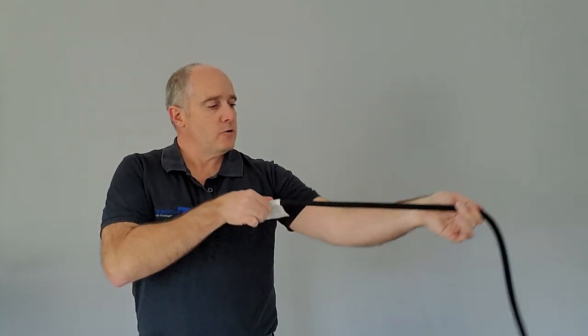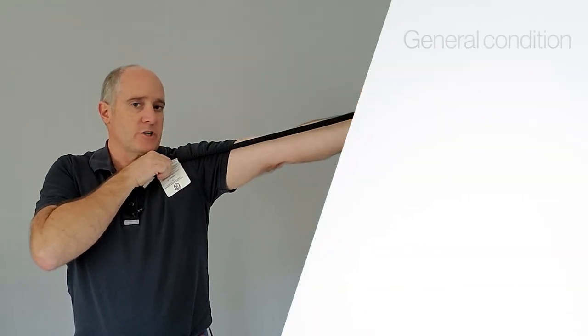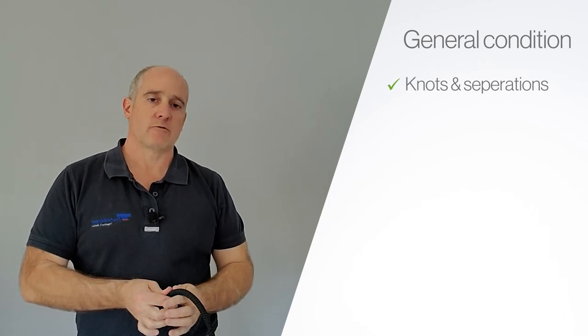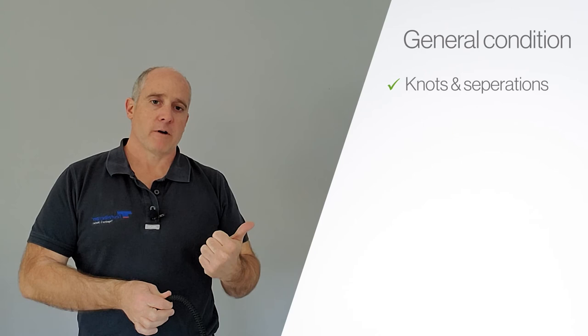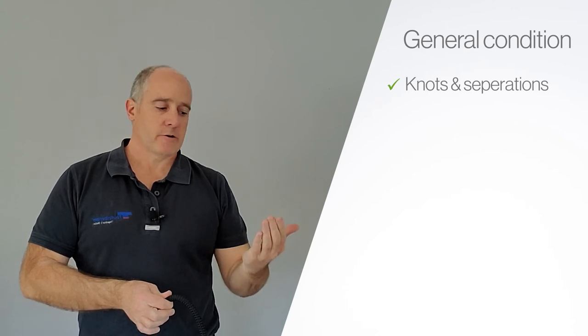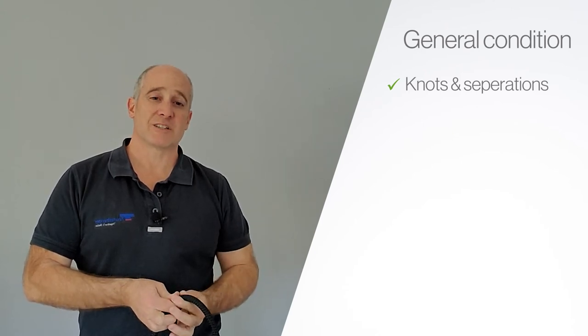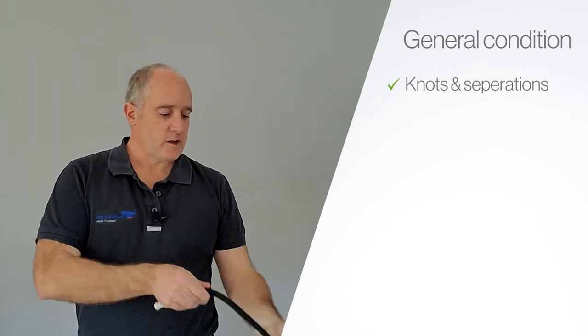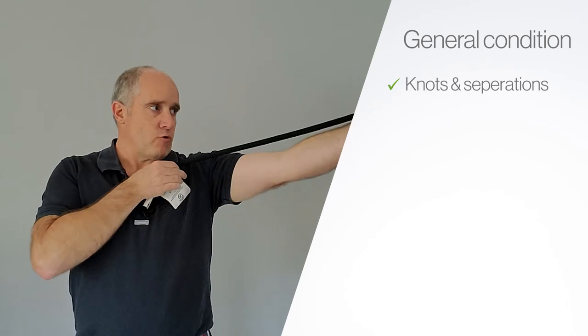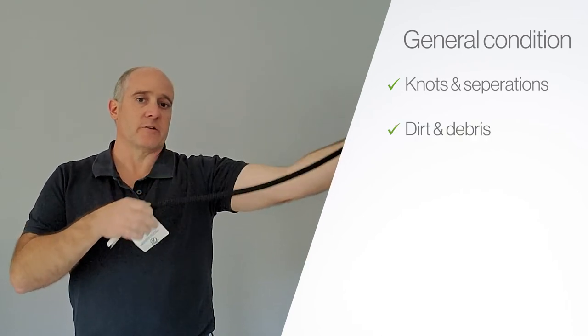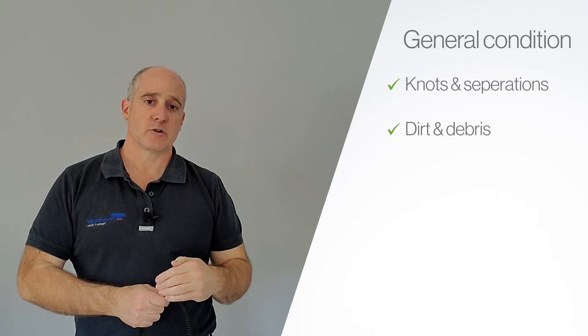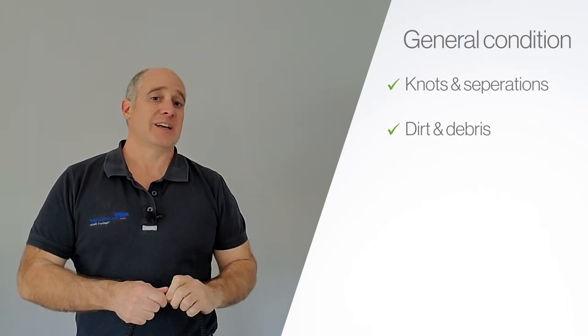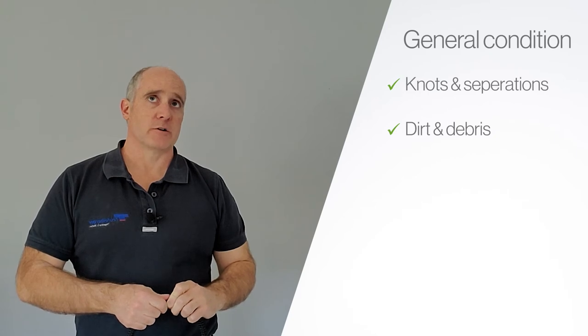So when you do pull that rope out, the things you want to check for are knots, separations, anything like that. So you're looking for a knot while you're on the ground instead of finding it when you're above the ground. You're looking for duct tape, electrical tape, things like that will not hold your weight. You're also checking for any dirt or debris or things like that that can either impact your hardware that you're using or get into the core of that rope on kern mantle and double braids and eat away at the core that you can't see.